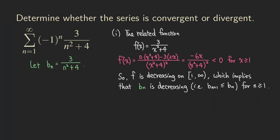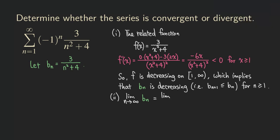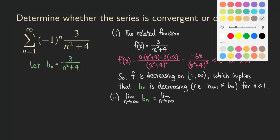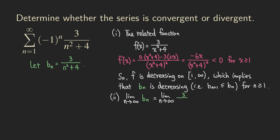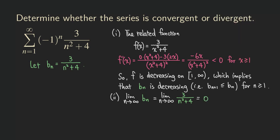Now we check the second condition, which requires taking the limit of b_n. The limit as n approaches infinity of 3 over n squared plus 4: we have a finite number in the numerator, and as the denominator gets larger and larger, this function approaches zero. So the second condition is also satisfied.